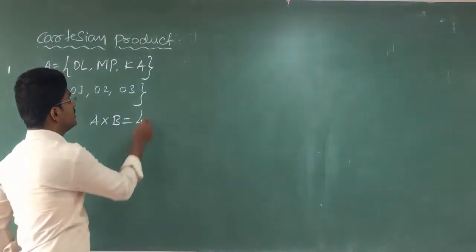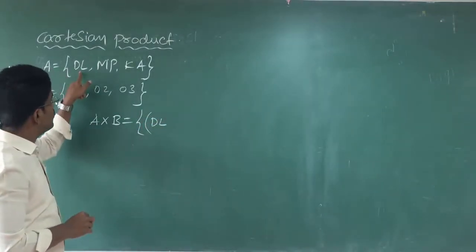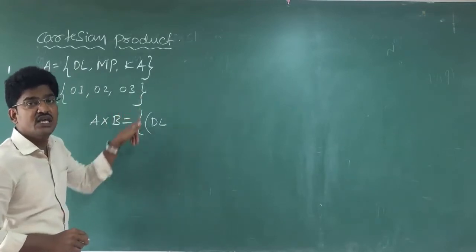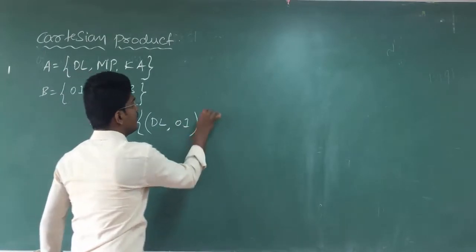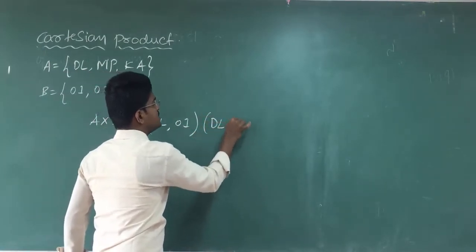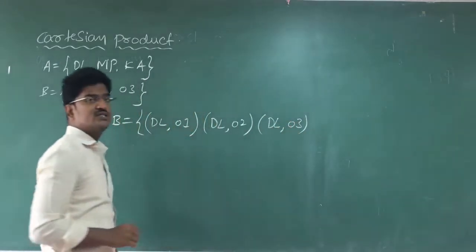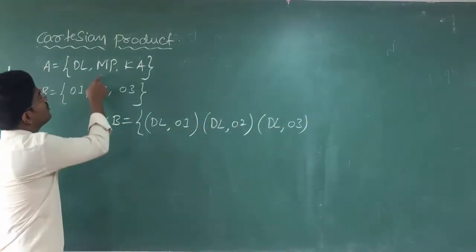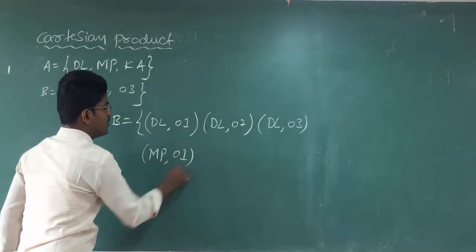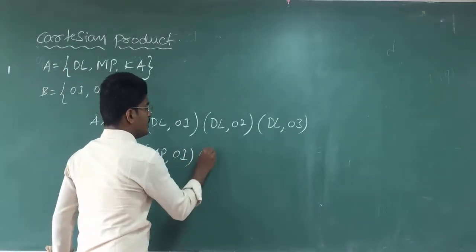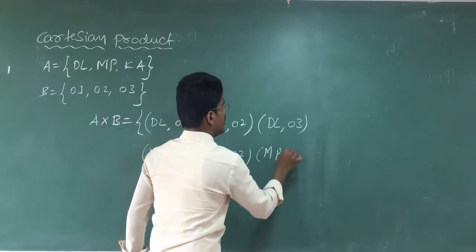What are those ordered pairs? First element is dl. With dl, I have to write all three elements as ordered pairs: (dl, 1), (dl, 2), (dl, 3). Next, we write (mp, 1), (mp, 2), (mp, 3).